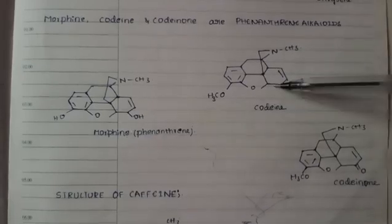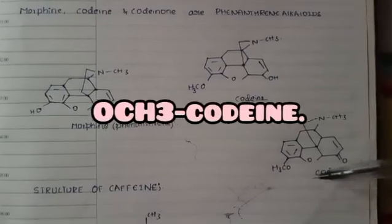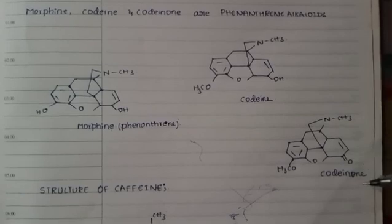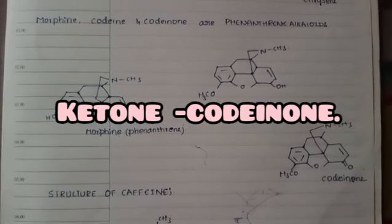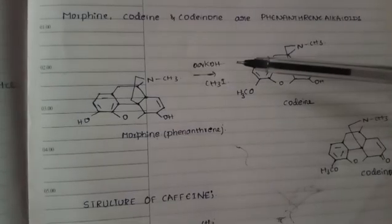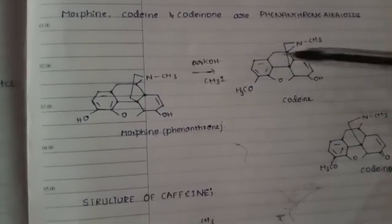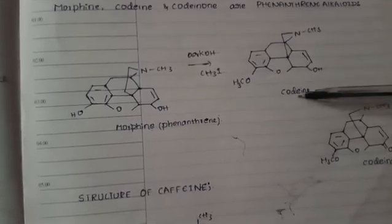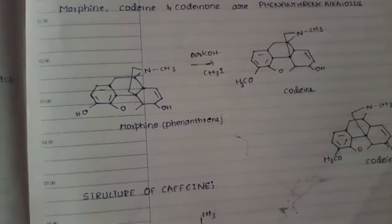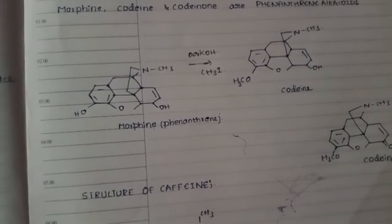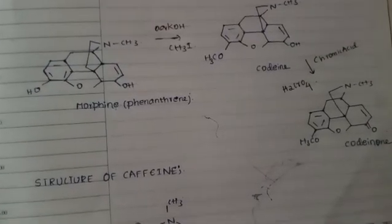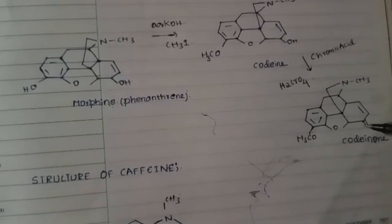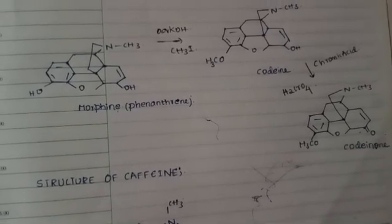For codeinone, the only change is a double bond with oxygen — a ketone group — added here. One method of conversion: using aqueous KOH and methyl iodide, morphine is converted into codeine. Using chromic acid, H₂CrO₄, morphine is converted into codeinone. The only difference in codeinone is the addition of this ketone group.